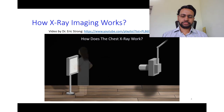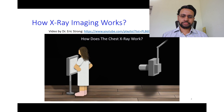We need a patient to stand between the source and the detector. This patient is in the typical position for a chest X-ray: facing away from the source, hands on her hips, and chest against the detector. The hands on the hips keep the arms from obscuring the view of the thorax.